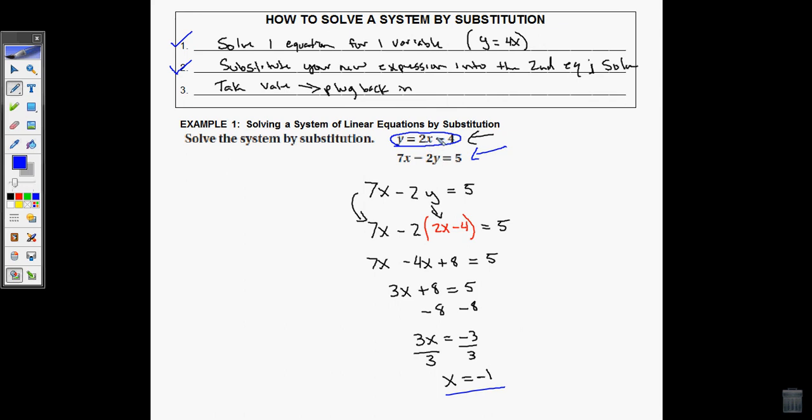Now my question is, which one do I plug it into? And the truth is, either one will work. I'm going to choose the easier one. The easier one here is the one that says y equals something. How do I know that? Because y is by itself. So that means y equals 2 times, and in place of x, I'm going to put my value of x, negative 1, minus 4. 2 times negative 1 is going to be negative 2. Minus 4, we bring that down. So y equals negative 2 minus 4. Y equals negative 6.